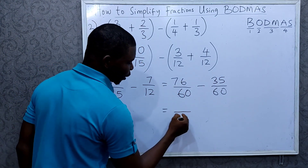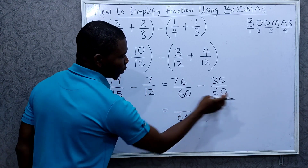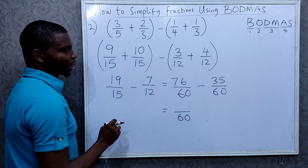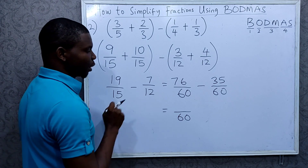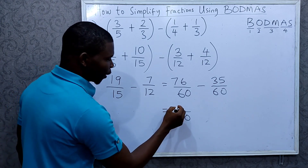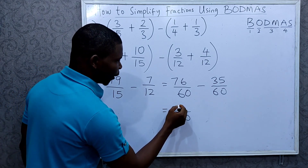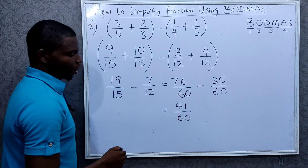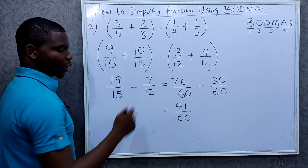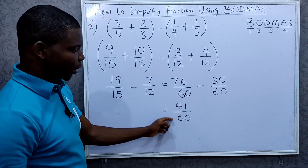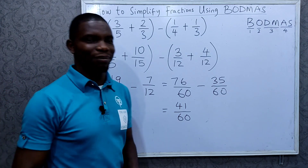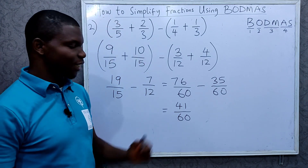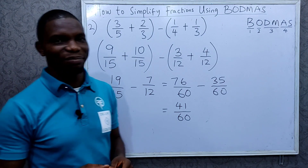Since the denominators are the same we simply subtract the numerators: 76 minus 35 gives us 41 over 60. This is in the lowest terms because you can't divide any further. So the answer to this question is 41 over 60.